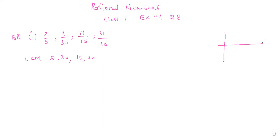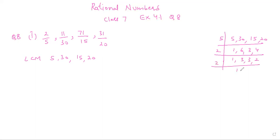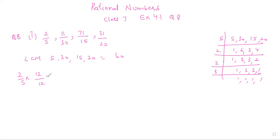Taking the LCM of 5, 30, 15, and 20: the LCM comes out to be 60. Now we equate the denominators. First, 2/5 multiplied by 12/12 gives 24/60. Then 11/30 multiplied by 2/2 gives 22/60.